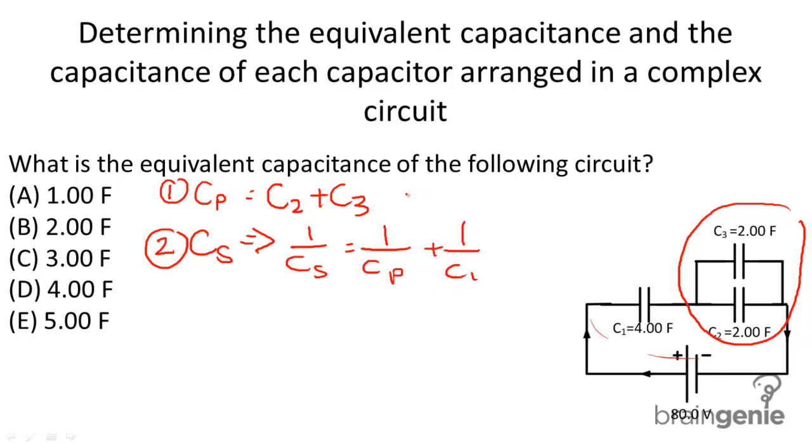Okay, so let's do this out first. This is going to equal 2 plus 2, and that's going to equal 4. So the equivalent capacitance of the parallel portion is going to be 4 farads.